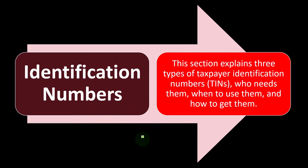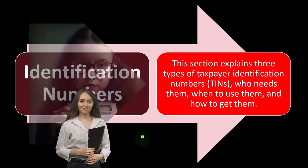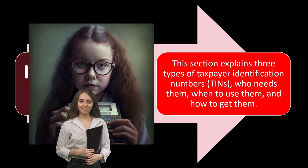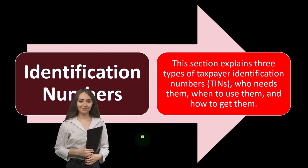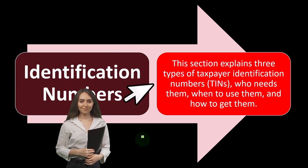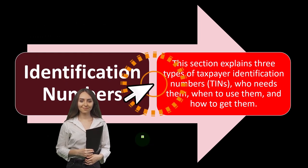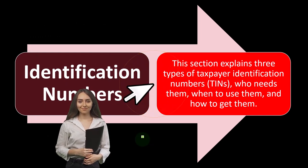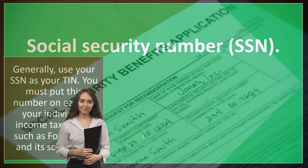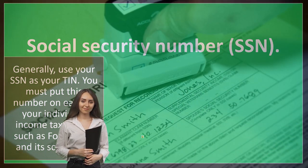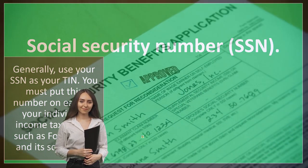Here is Schedule C — Profit or Loss from Business — where we have income minus expenses, the net income flowing to Schedule 1, then to page one of the 1040. The IRS knows us not by name but by numbers. This section explains three types of taxpayer identification numbers: the TINs — who needs them, when to use them, and how to get them.